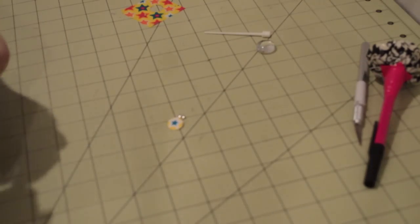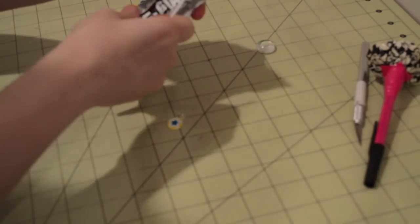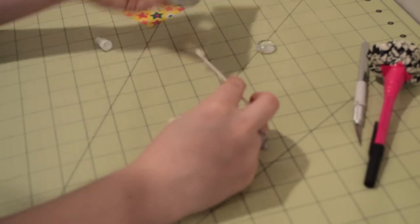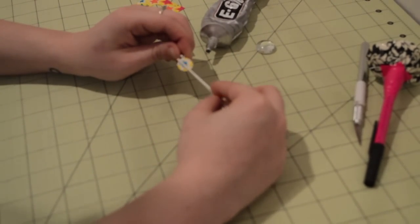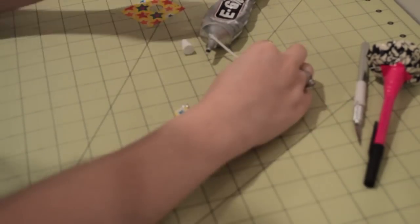Now take some E6000 glue and just spread a little bit on top and place the gem directly on top and you have this super cute glass gem using duct tape.